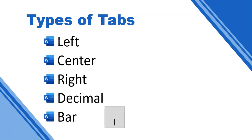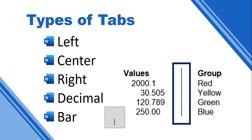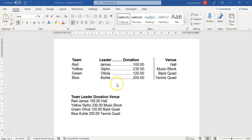The last type is the bar tab. It looks like a little line at the bottom, and it basically creates a vertical line in your text. So if you have a block of text, it shows a line — that's what a bar tab looks like. You can use it as a column divider.